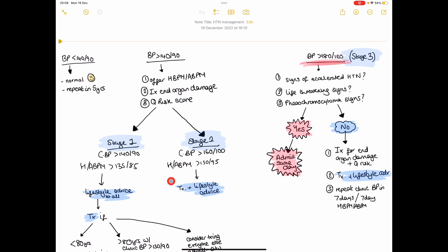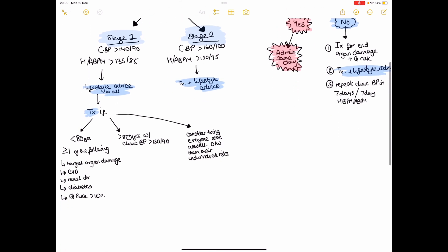So to manage stage one hypertension, what we do is we see who we're talking to, who is in front of us. Is this person high risk, have they got other risk factors?